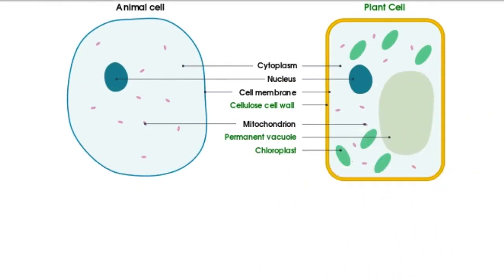Nearly all cells contain cytoplasm, a nucleus, cell membrane, and mitochondria. As well as these structures, plant cells have a cell wall and a permanent vacuole, and plant cells that photosynthesize contain chloroplasts.